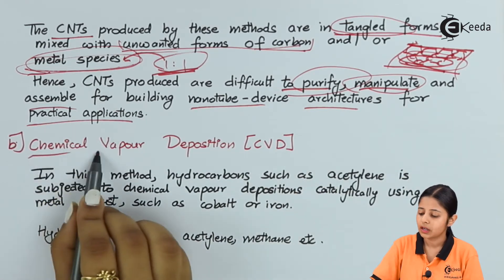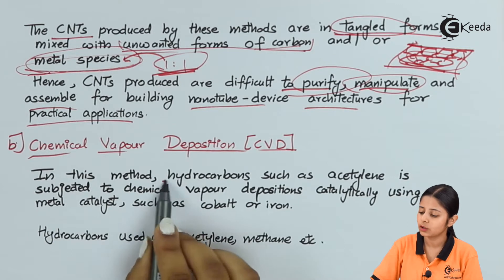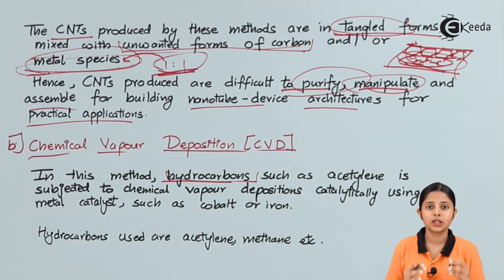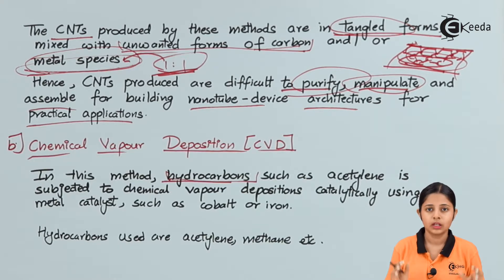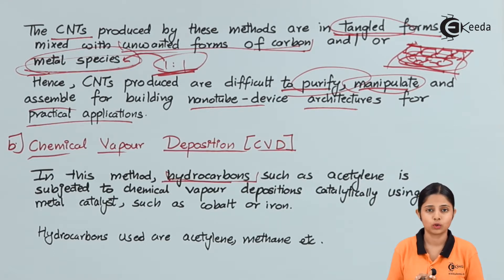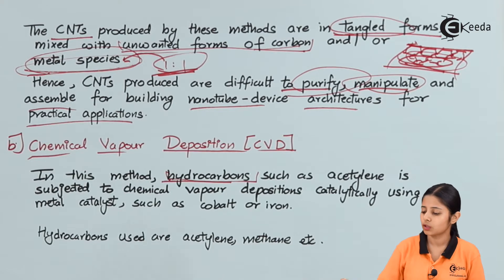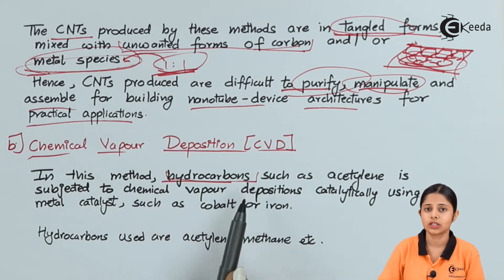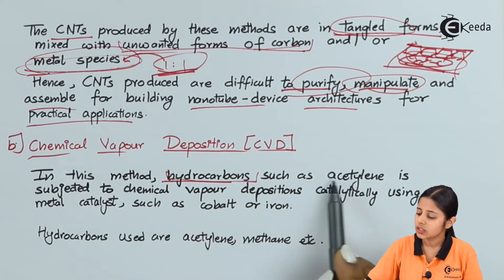The next method is the chemical vapor deposition (CVD) method. In this method, hydrocarbons are used. Hydrocarbons are organic materials containing only two elements — hydrogen and carbon. Apart from carbon and hydrogen, some small amounts of other elements such as oxygen, sulfur, or nitrogen may also be present, but the main components are carbon and hydrogen. The entire field of organic chemistry is based on hydrocarbons, such as acetylene.